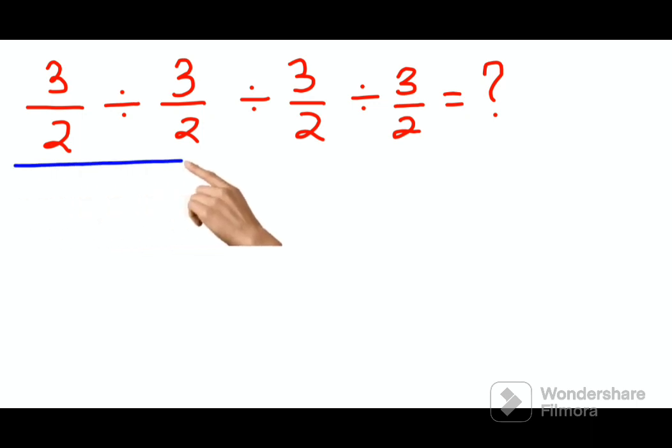We have 3 upon 2 divide by 3 upon 2 divide by 3 upon 2 divide by 3 upon 2.